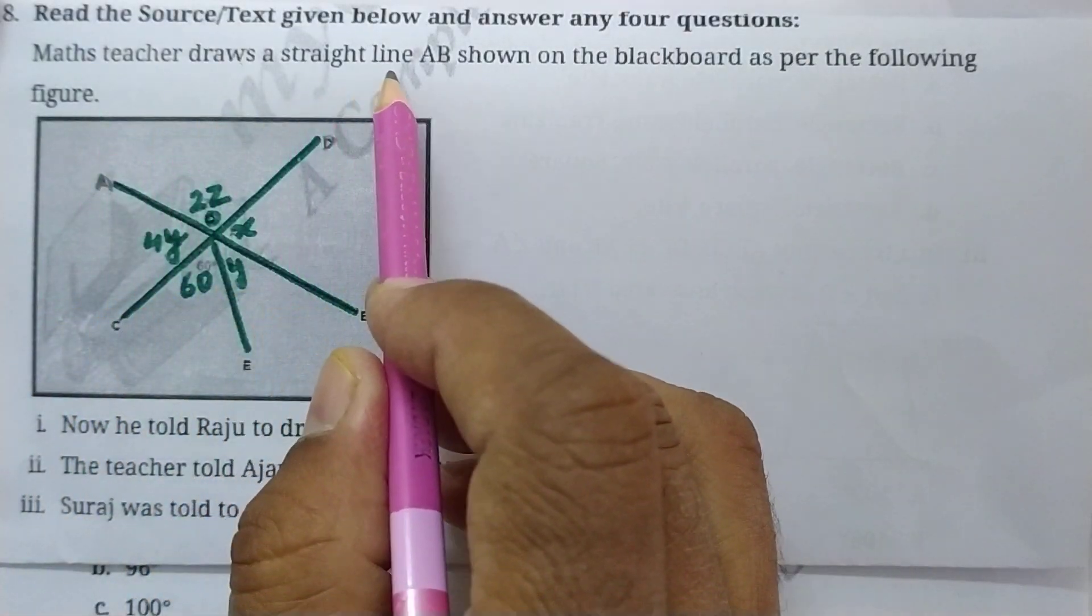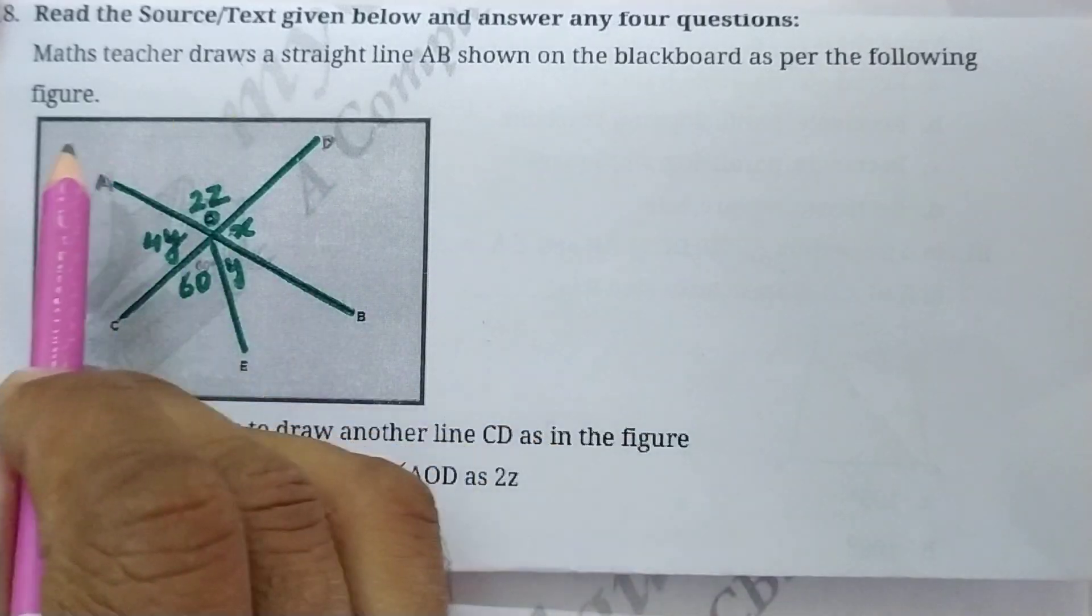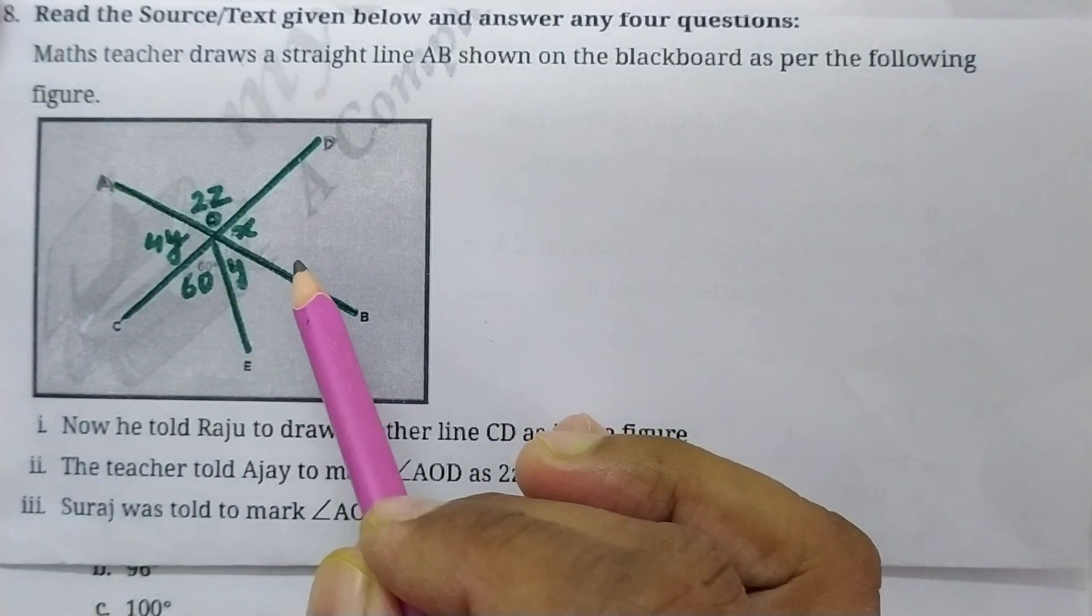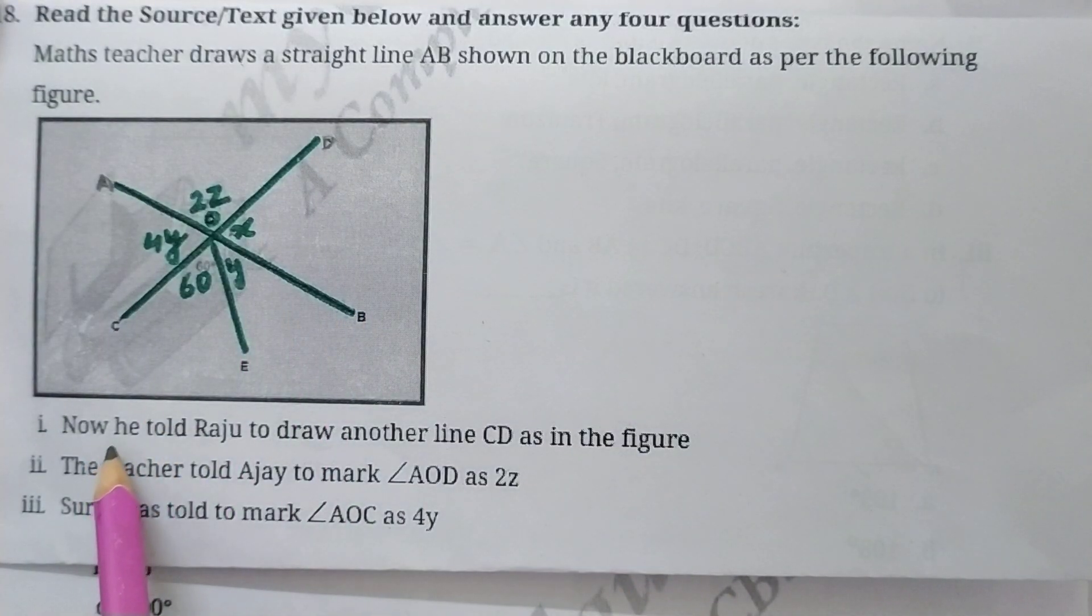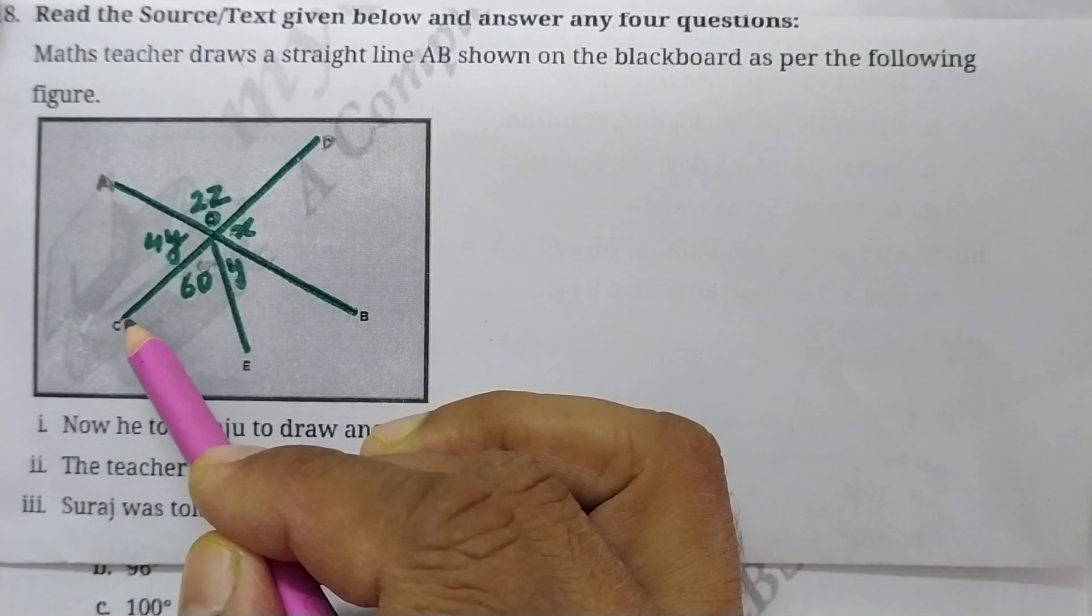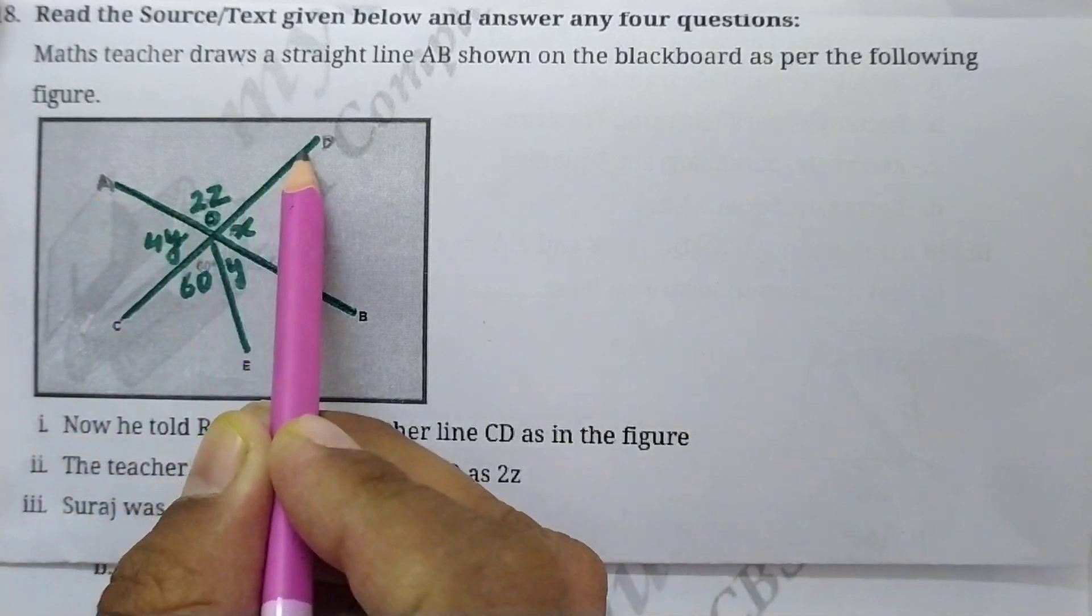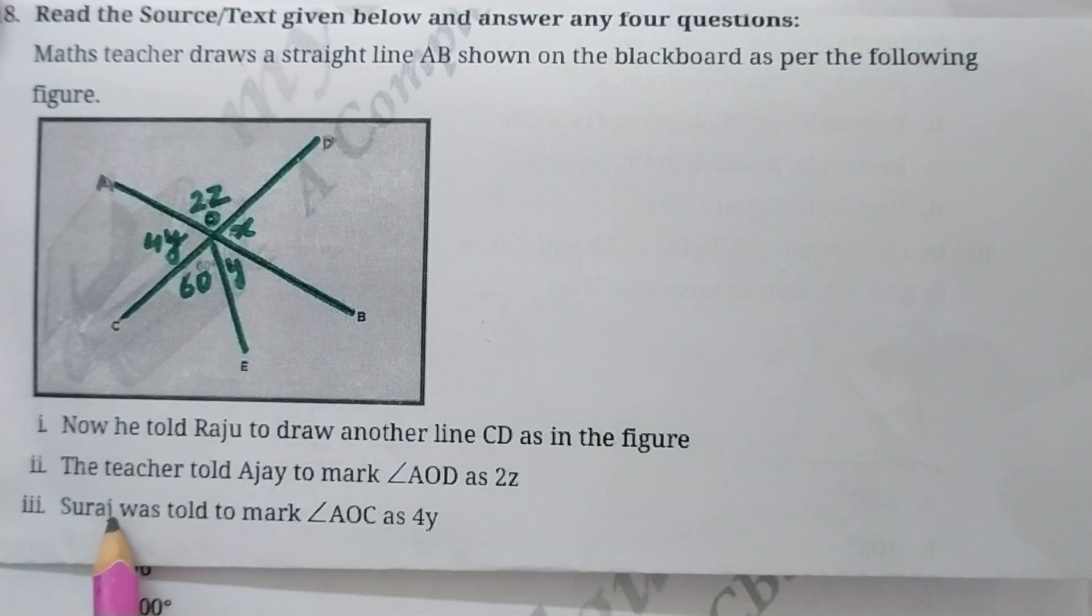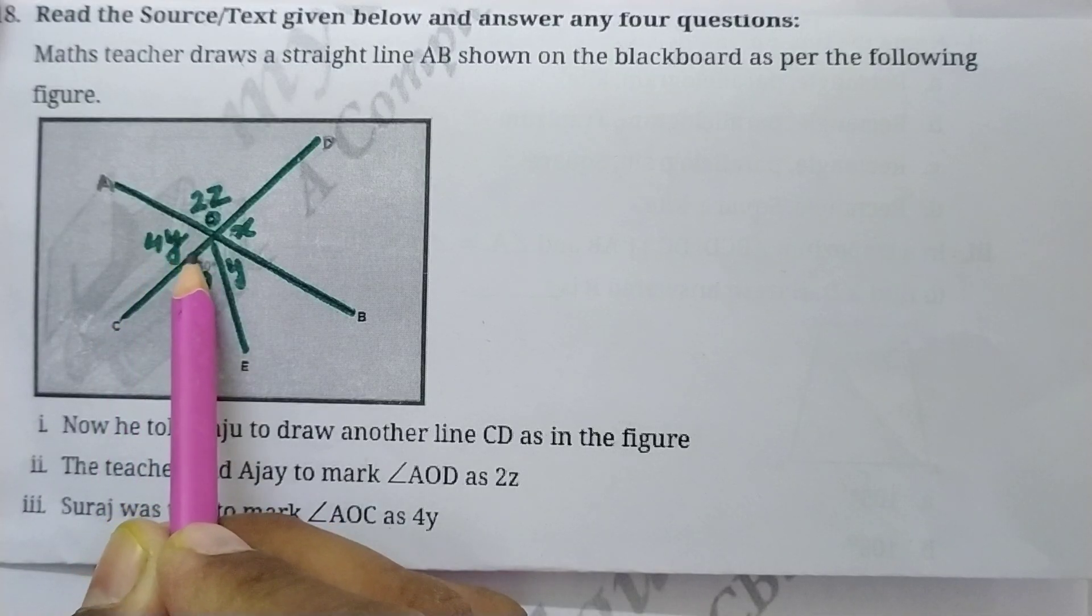Math teacher draws a straight line AB shown on the blackboard as per the following figure. So this is line AB. Now he told Raju to draw another line CD as in the figure. The teacher told Ajay to mark angle AOD as 2z. So this angle AOD is 2z. Suraj was told to mark angle AOC as 4y. So angle AOC, this angle is 4y.